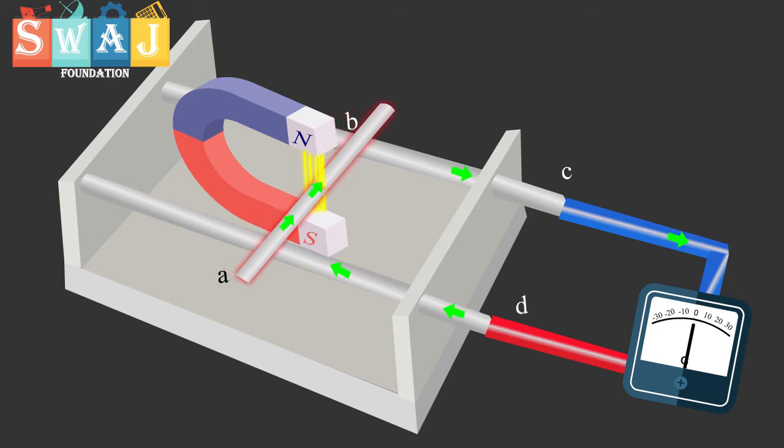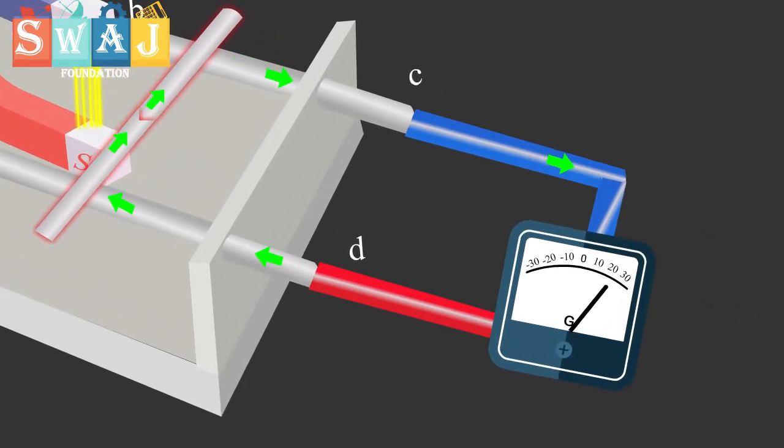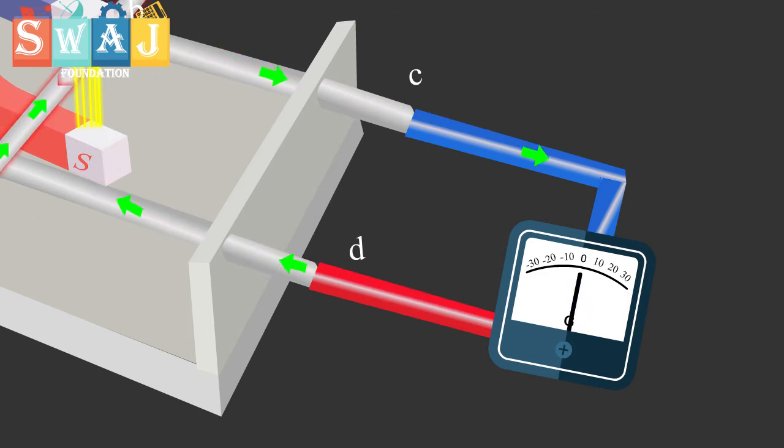If the rod is pulled to the right with constant velocity V, the galvanometer indicates a current flowing through the loop. Obviously, the current is induced due to the motion of the conducting rod across the magnetic field.